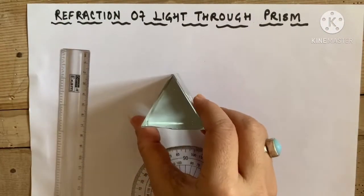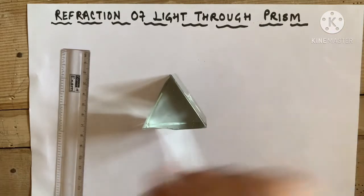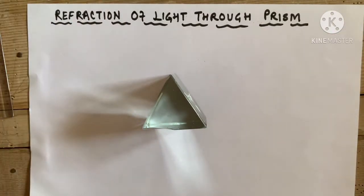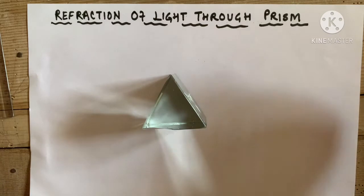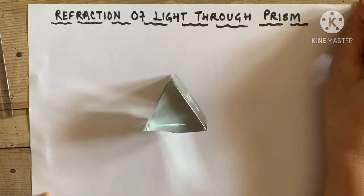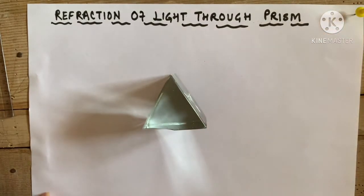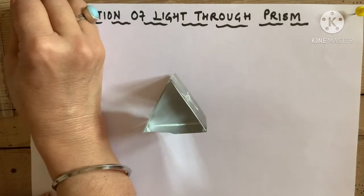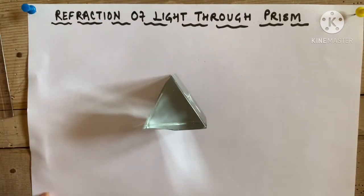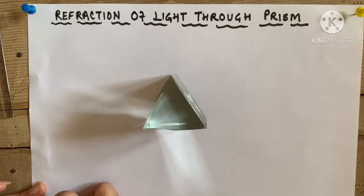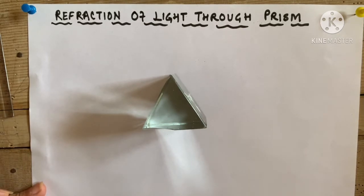I'll be keeping all these things here to use when they are required. The first step is to fix a sheet of paper on the drawing board with soft board pins, so that it does not move when we do the activity.